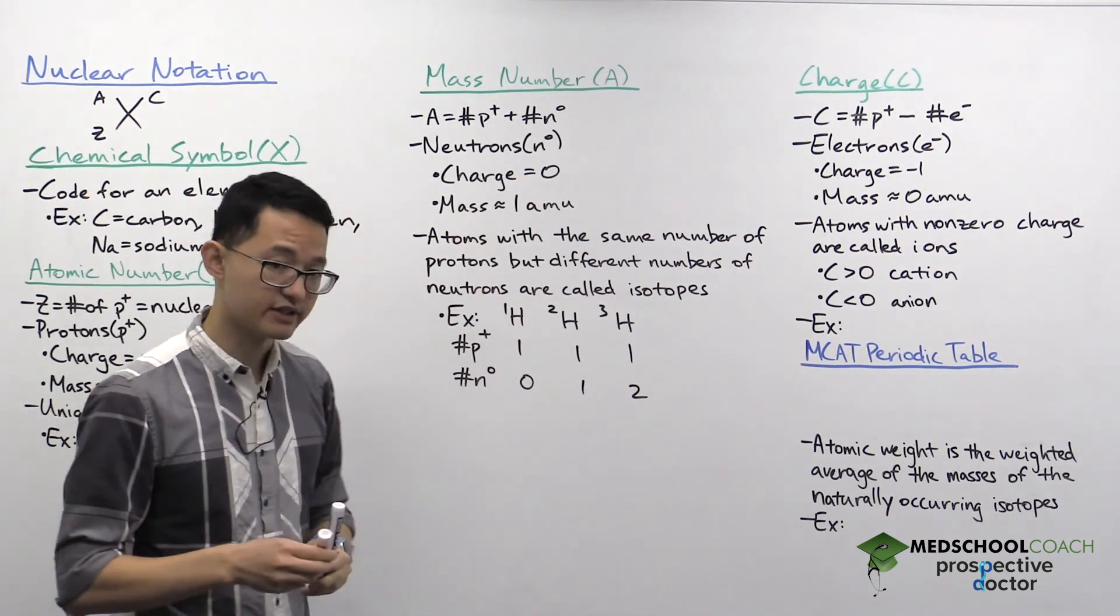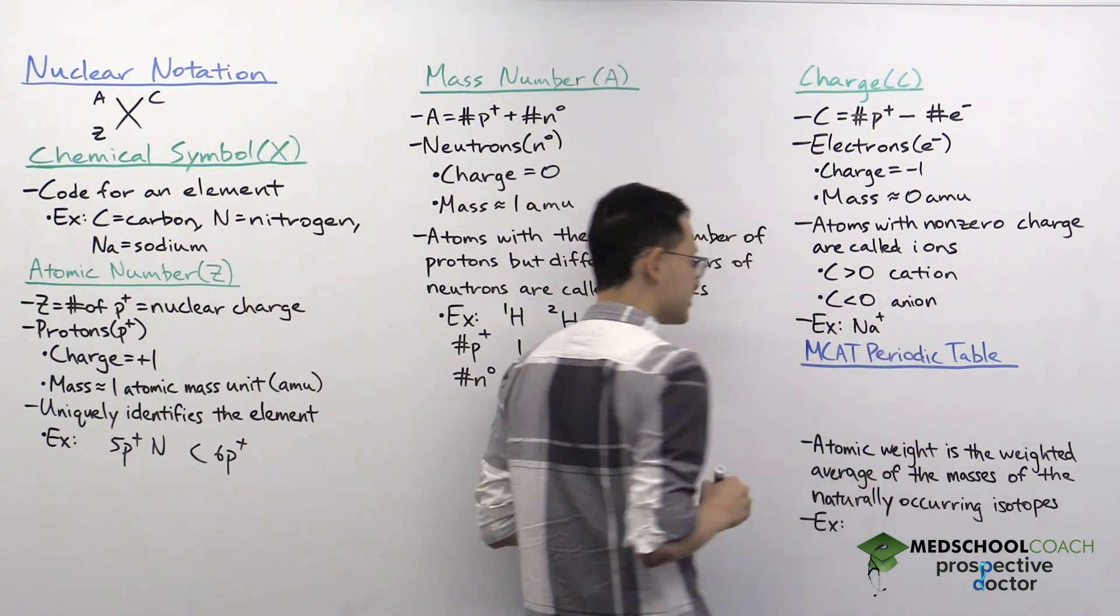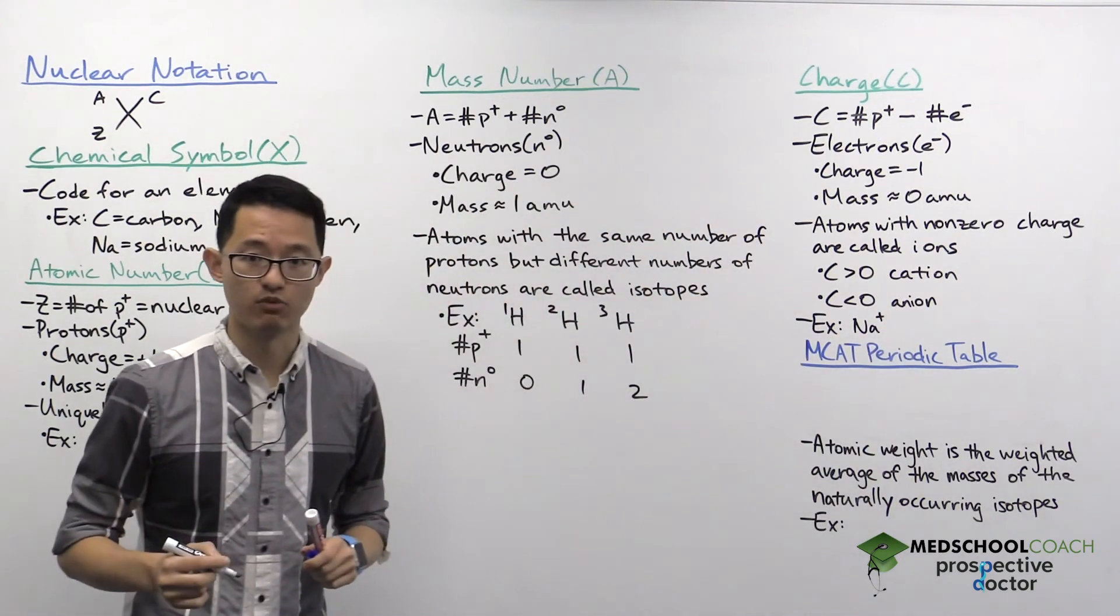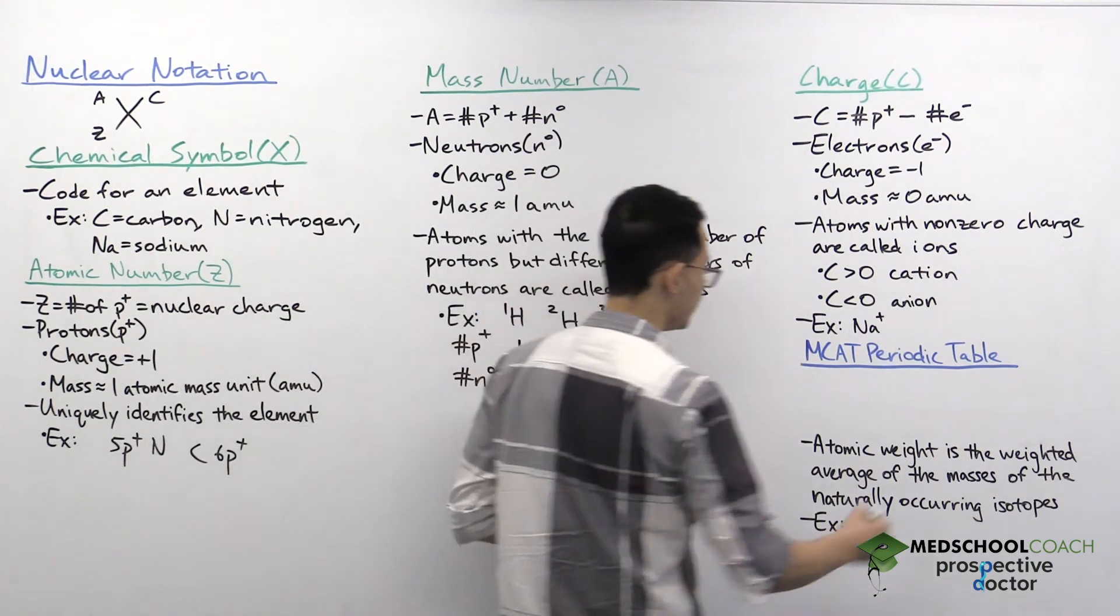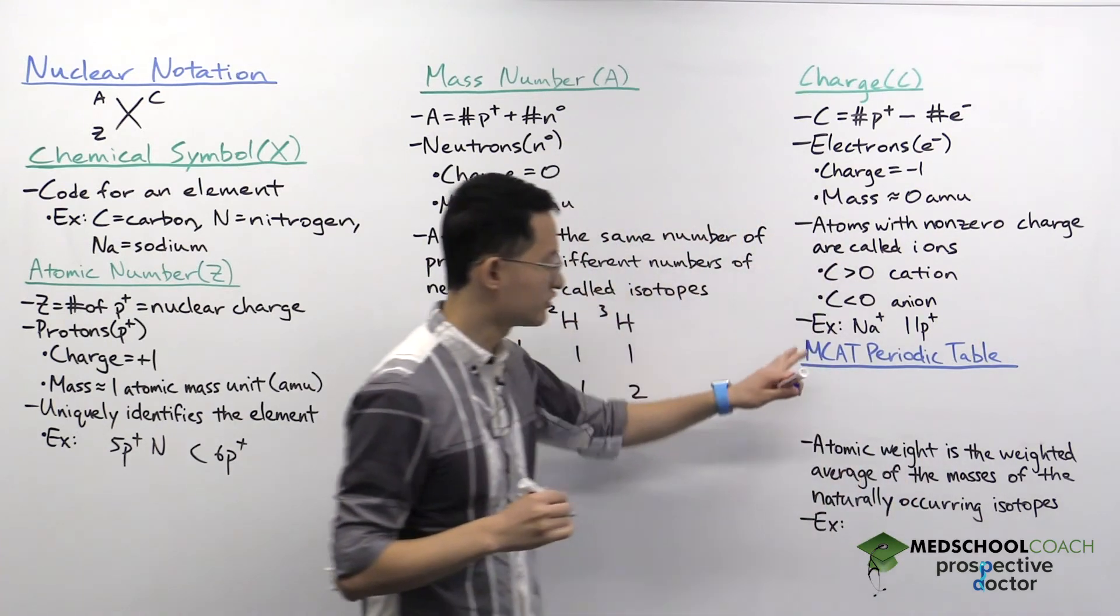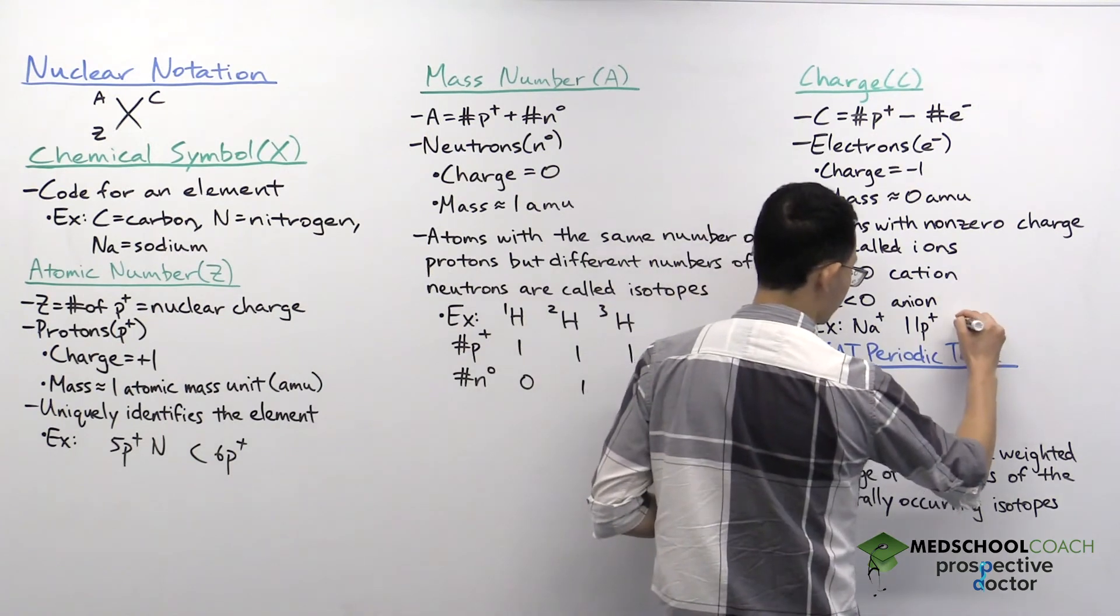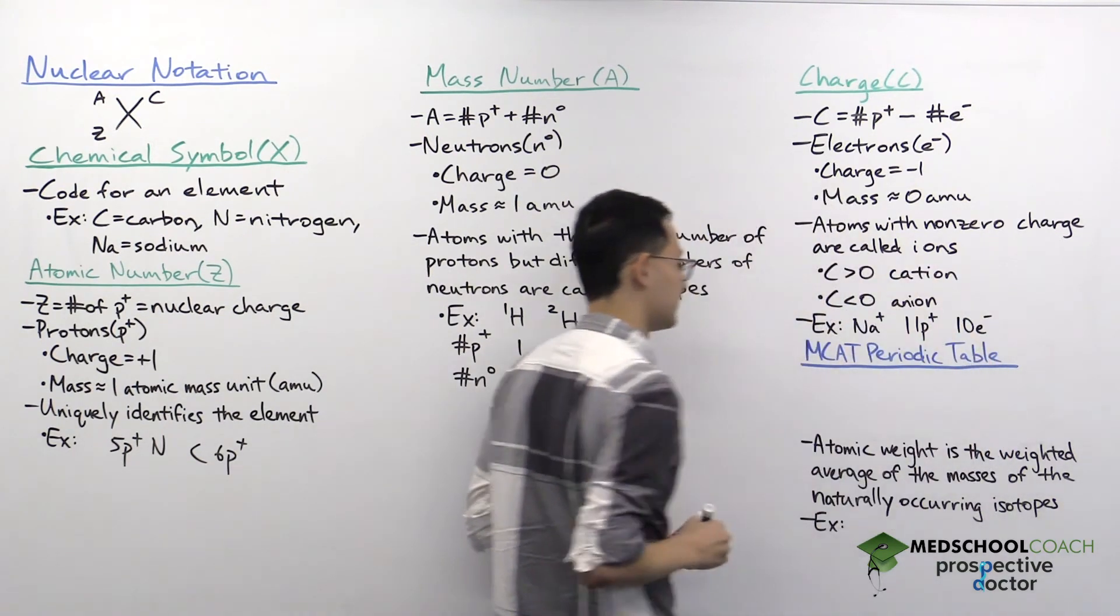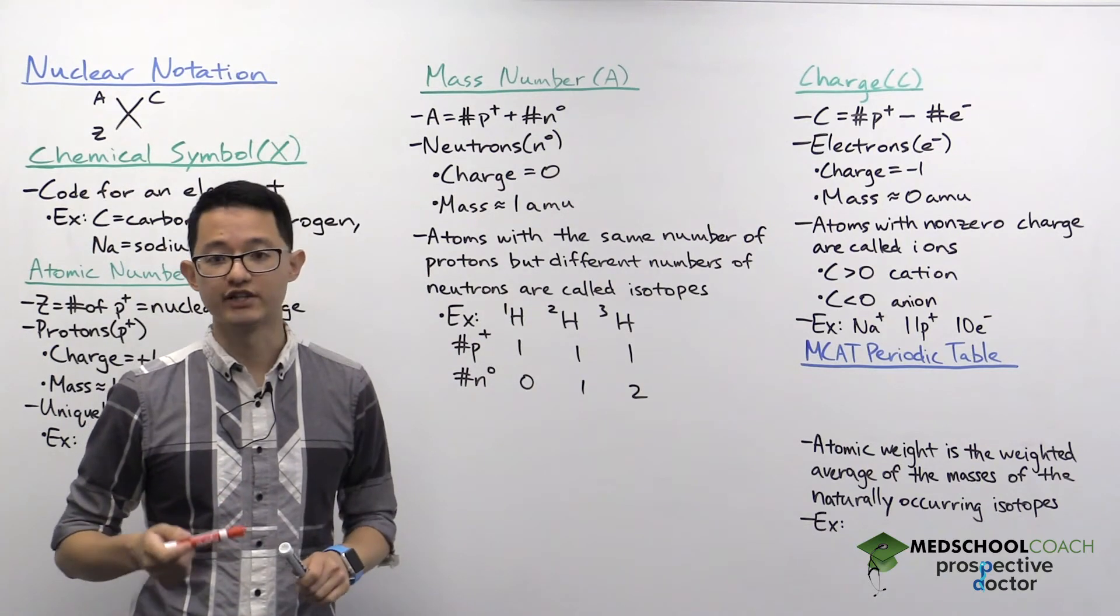So let's go ahead and consider an example. Let's say we have a sodium cation, Na+, which has a charge of plus one. Since this is a sodium atom, you can look in the periodic table and see that it has to have 11 protons. And in order to have a charge of plus one, it must have one more proton than electrons. So it has 10 electrons. All right. So that's how nuclear notation works.